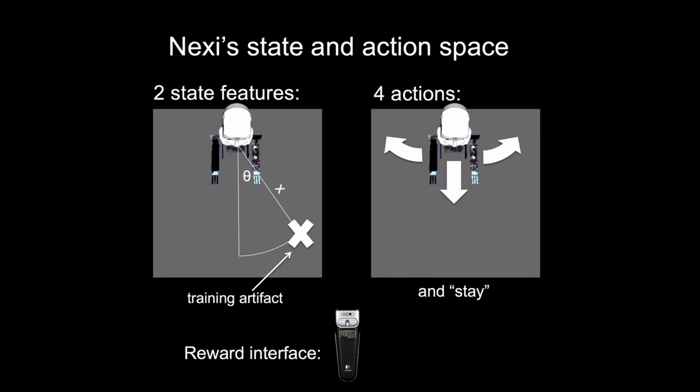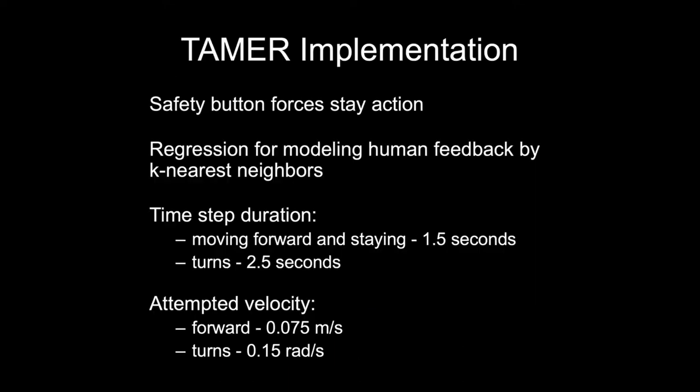The reward interface was a presenter's remote where the right and left buttons were positive and negative feedback signals, respectively. There is a button for toggling training on and off — an important feature of TAMER that many people miss is that if the trainer is done training, it takes just a line or two to turn learning off and have the agent act according to what it's learned. There was also a safety button, because sometimes Nexi would start to run into furniture, which would force the stay action. The core implementation used k-nearest neighbors regression to create the model of human feedback.